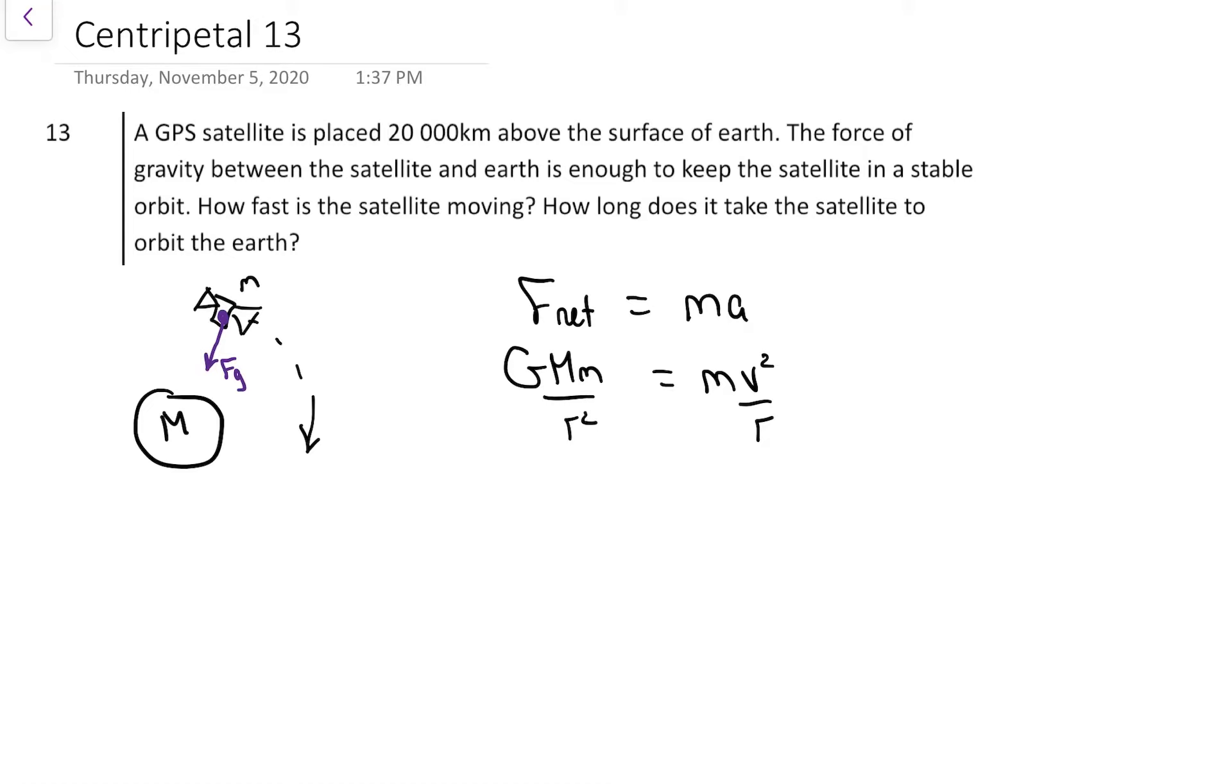It's been a while, but the R that we plug in is a distance from the center of Earth all the way out to where the satellite is. So our R value is the height of the satellite, plus the radius of Earth.